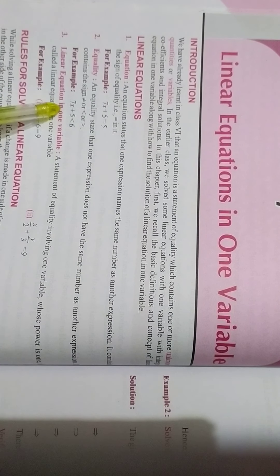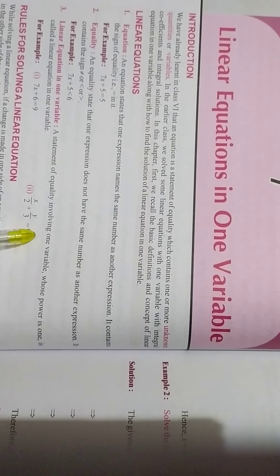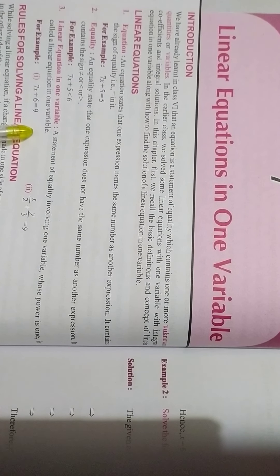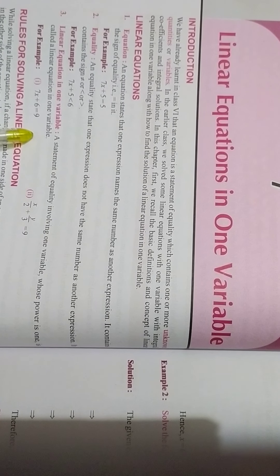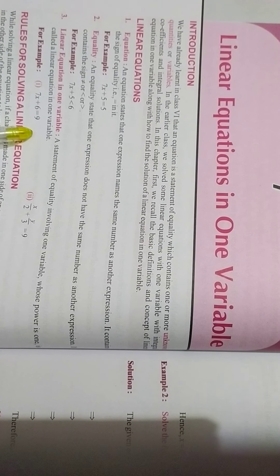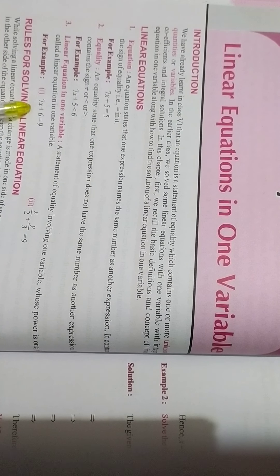So here we have a linear equation in one variable — a statement of equality involving one variable whose power is 1 is called a linear equation in one variable. So here we have an equation with one variable and the maximum power is one. For example, 7x plus 6 is equal to 9, where the variable is x and the power is one.